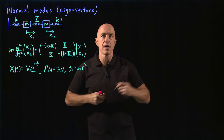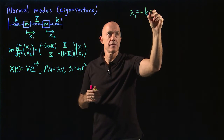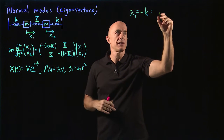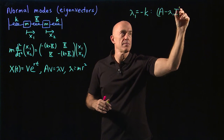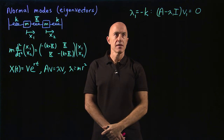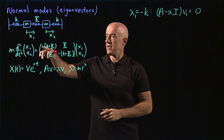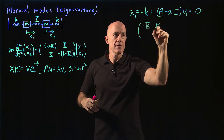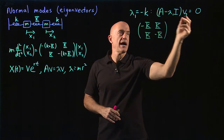Let's look at the two eigenvalues one by one. We have lambda one equal to negative little k as the first eigenvalue. We're trying to find the eigenvectors. We're doing A minus lambda one I times eigenvector v one equals zero. We need to subtract negative k from the diagonal, which is the same as adding little k, and we end up with the matrix: minus big K, big K, big K, minus big K times eigenvector v one.